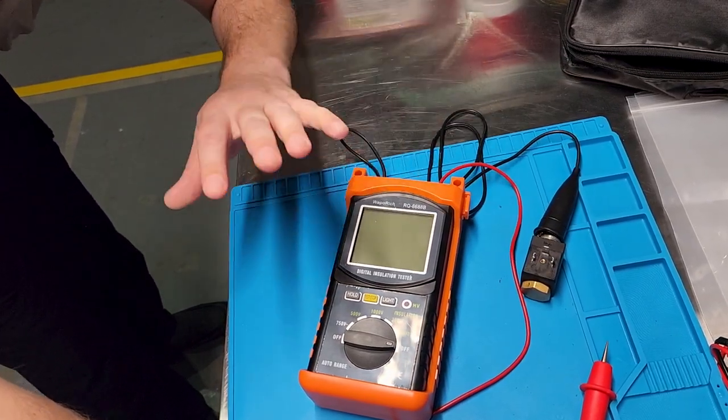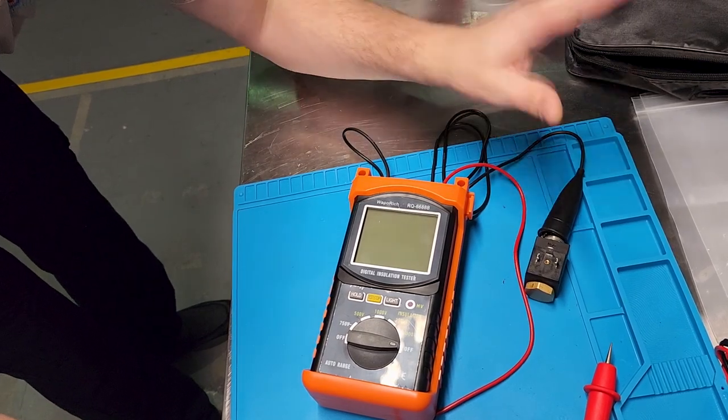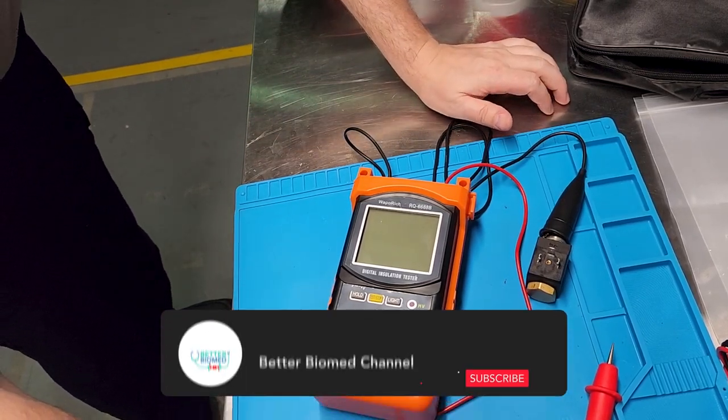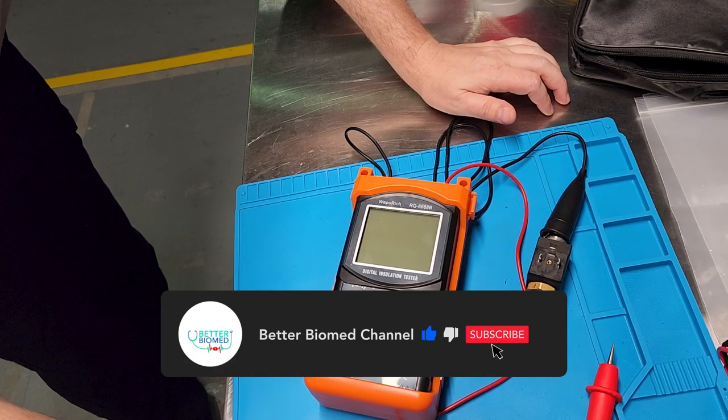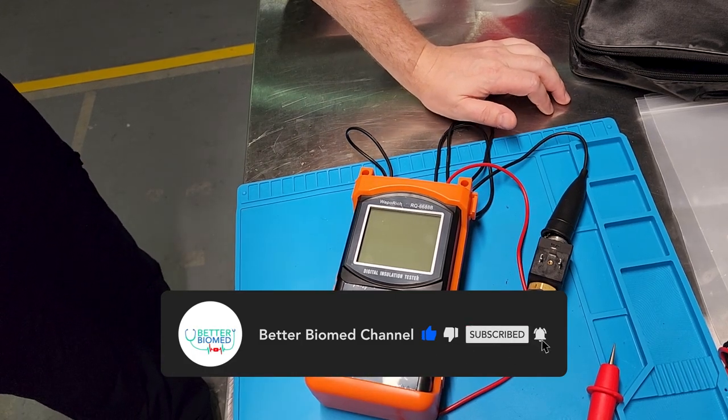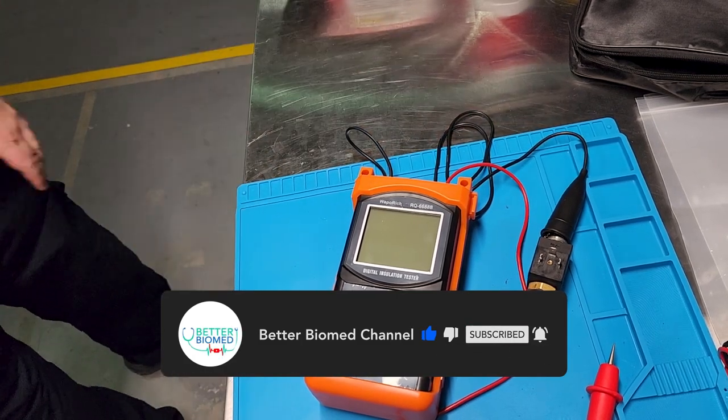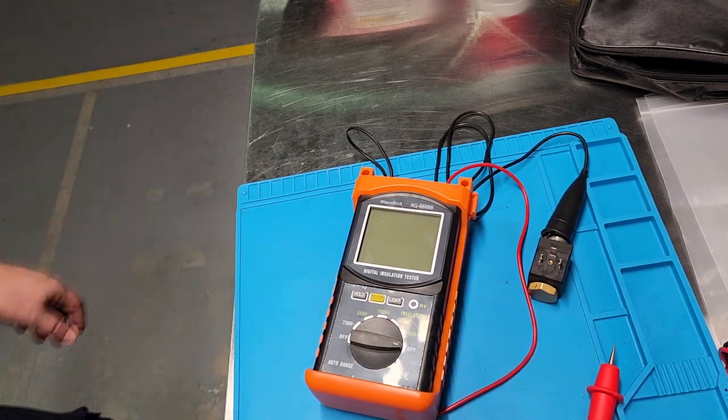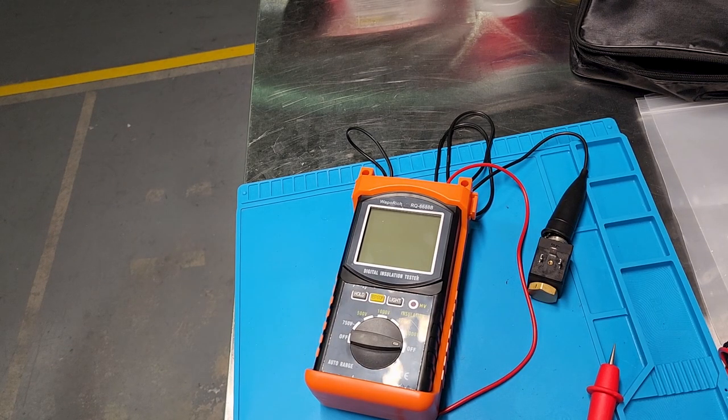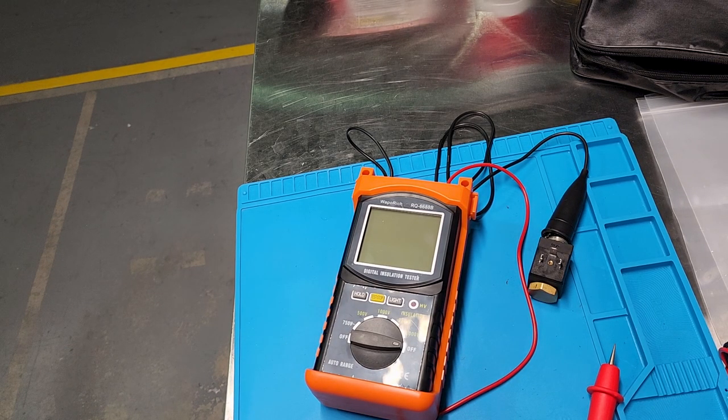So there you go, with an actual measuring instrument, regardless of its accuracy, you can actually find out if a coil or a motor is good or bad using a $60 meter. Anyway guys, there you have it. That's the Wapple Rich RQ-6688 Bravo. Good little meter and it works.